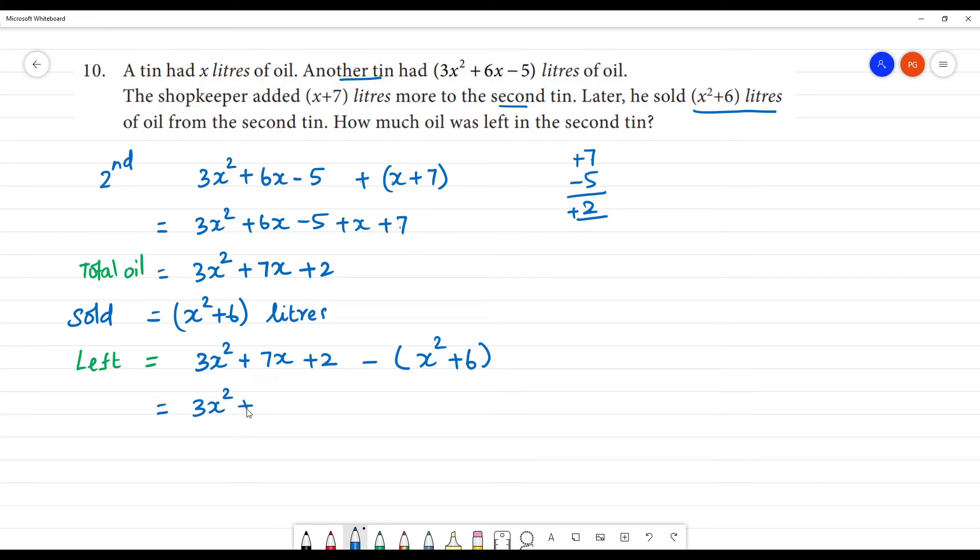This is 3x² + 7x + 2. Here we have minus x² minus into plus is minus 6. Now, 3x² minus x² is 2x².